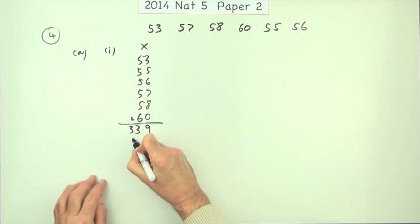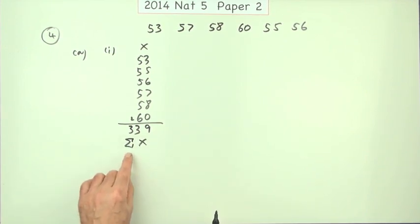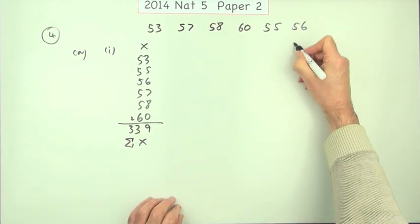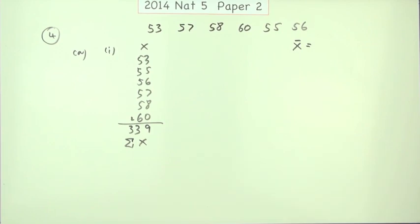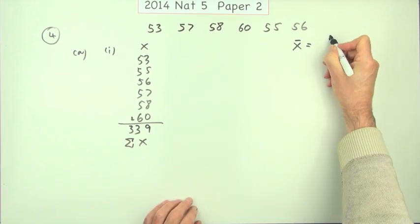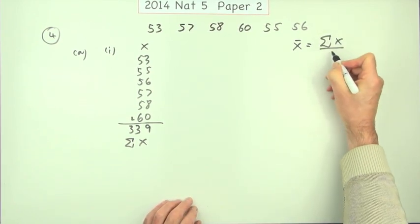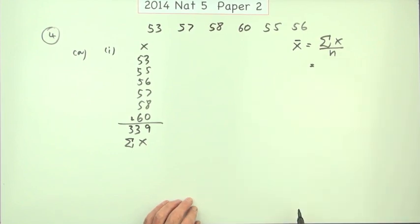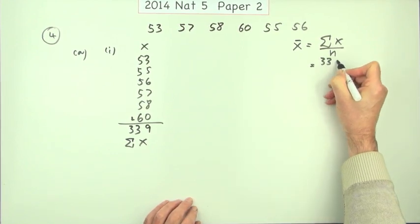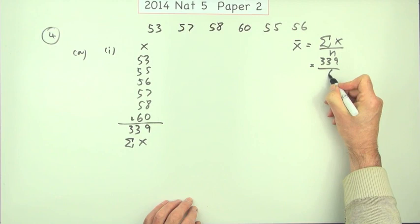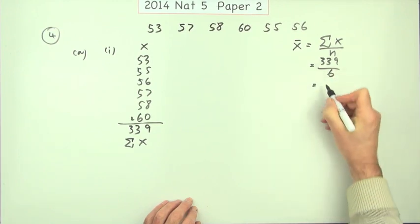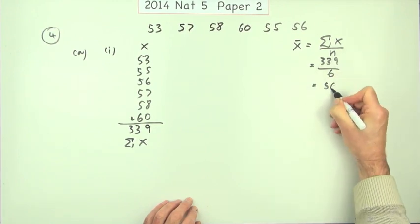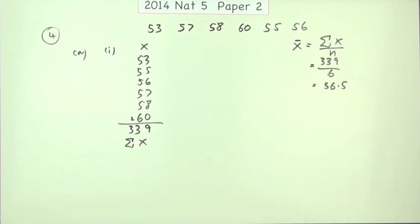The name for that part is sigma x, the sum of the x's. So in showing for the working for this I would have the mean, which you would call x bar, would be the sum of all the x's divided by how many there are. So that would be 339 divided by 6. And that's going to give you 56.5.